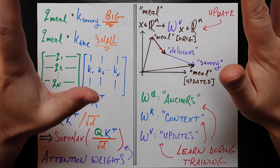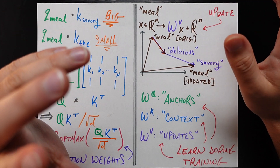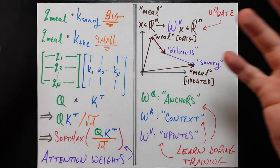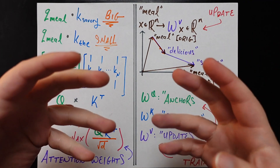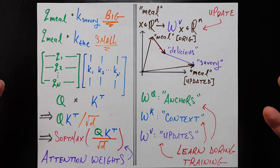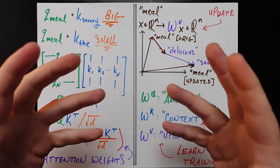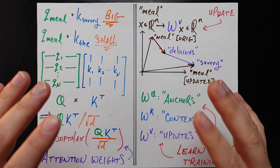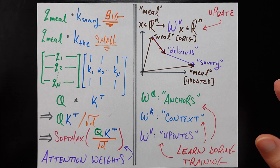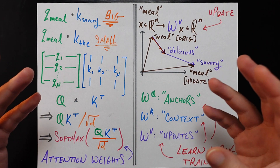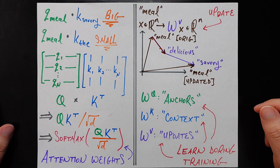There's a lot more to say about the story of attention, including how attention actually cares about the order of words, because right now it's treating words more like a set than a sequence. We should also talk about the concept of multiple heads of attention — everything we talked about here is one head of attention — and what multi-headed attention means. Another topic is why today's process is more correctly called self-attention and what the other kinds of attention are. But let's save all those for upcoming videos. If you like this video, please like and subscribe for more videos like this. Any comments or questions are always welcome below, and I'll see all you wonderful people next time.